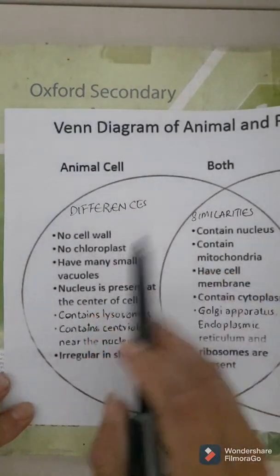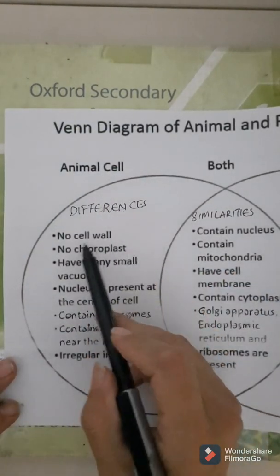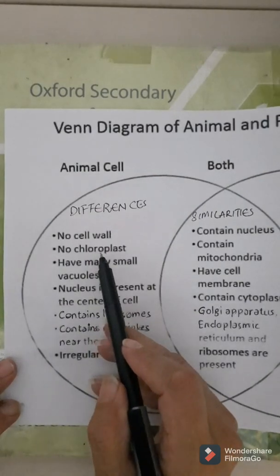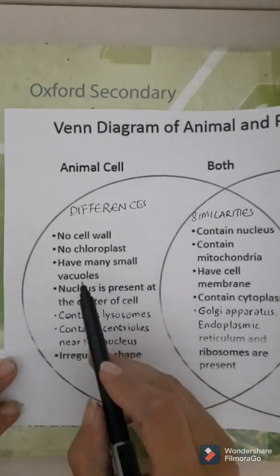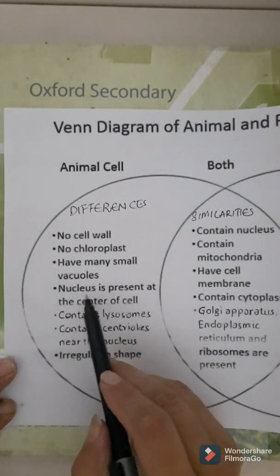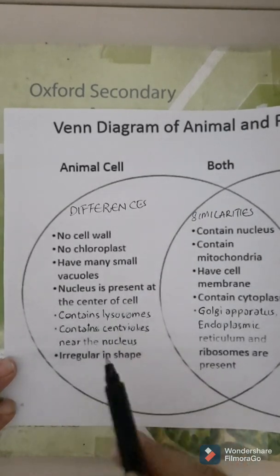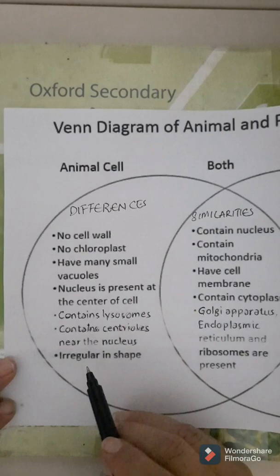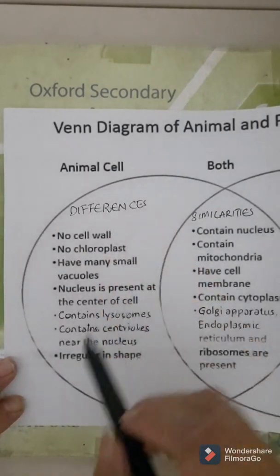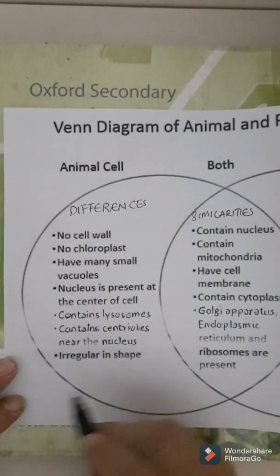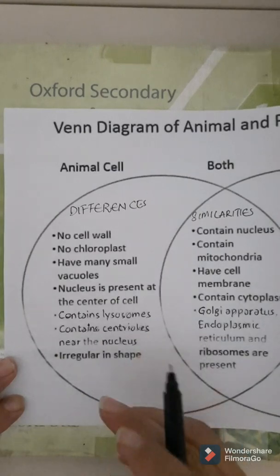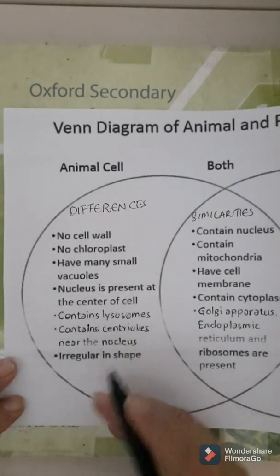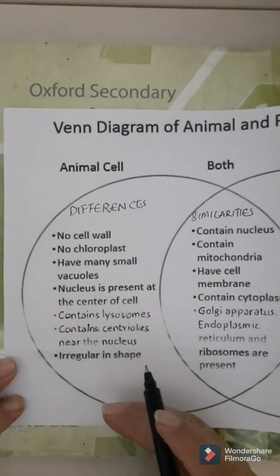How is an animal cell different from the plant cell? It has no cell wall, no chloroplast, and it has many small vacuoles. Nucleus is present in the center of the cell. Animal cells are found in different shapes — for example, oval, rectangular, square, irregular, etc.